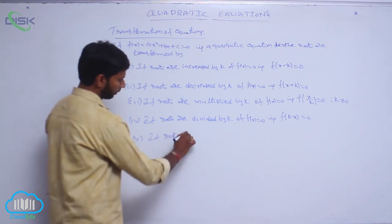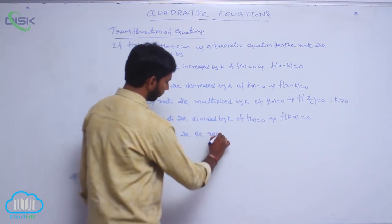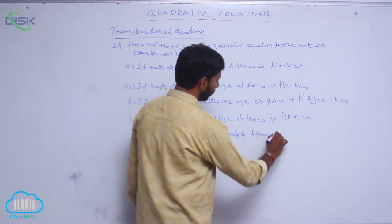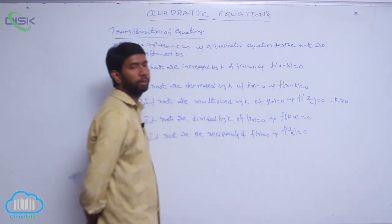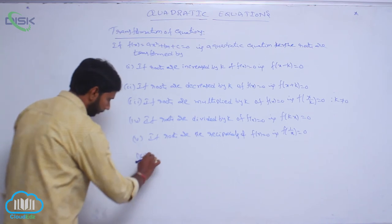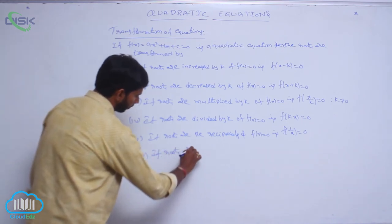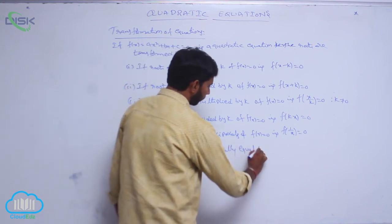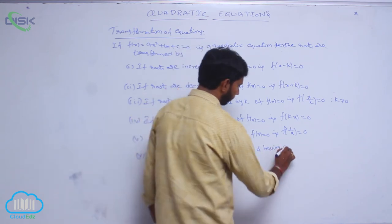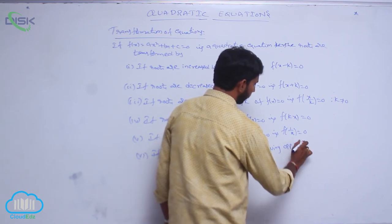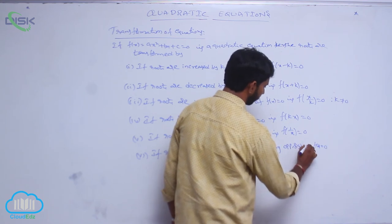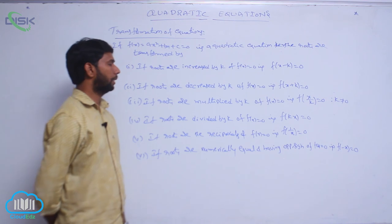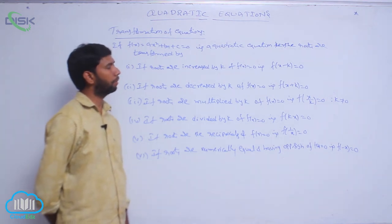If roots are reciprocated, then f of x equal to 0 becomes f of 1 by x equal to 0. If roots are numerically equal but having opposite sign, then f of x equal to 0 becomes f of minus x equal to 0.